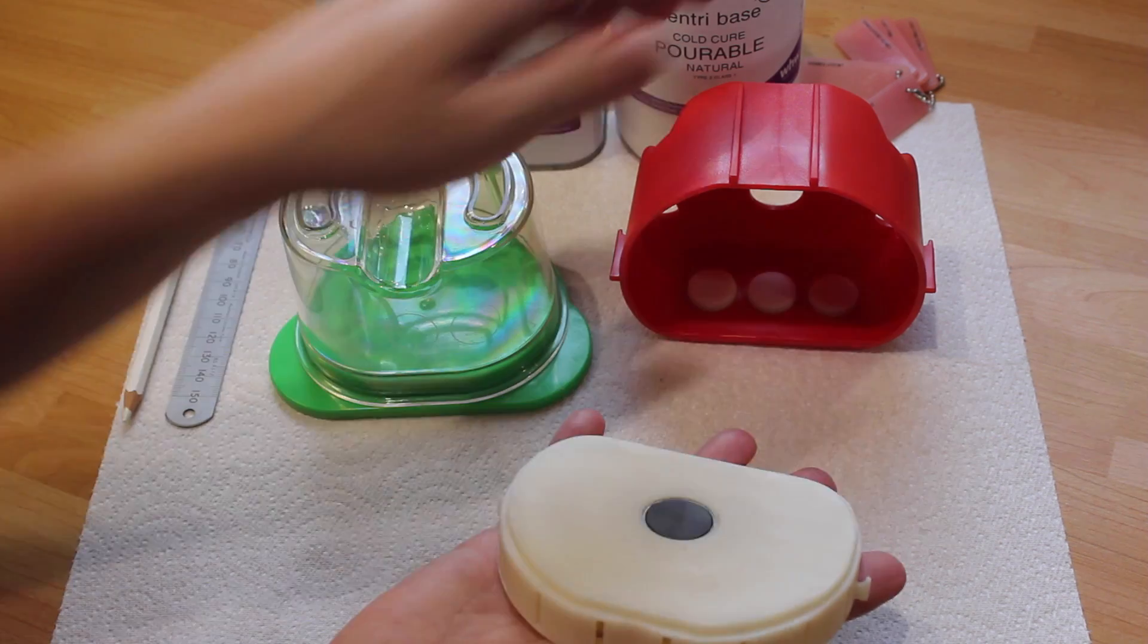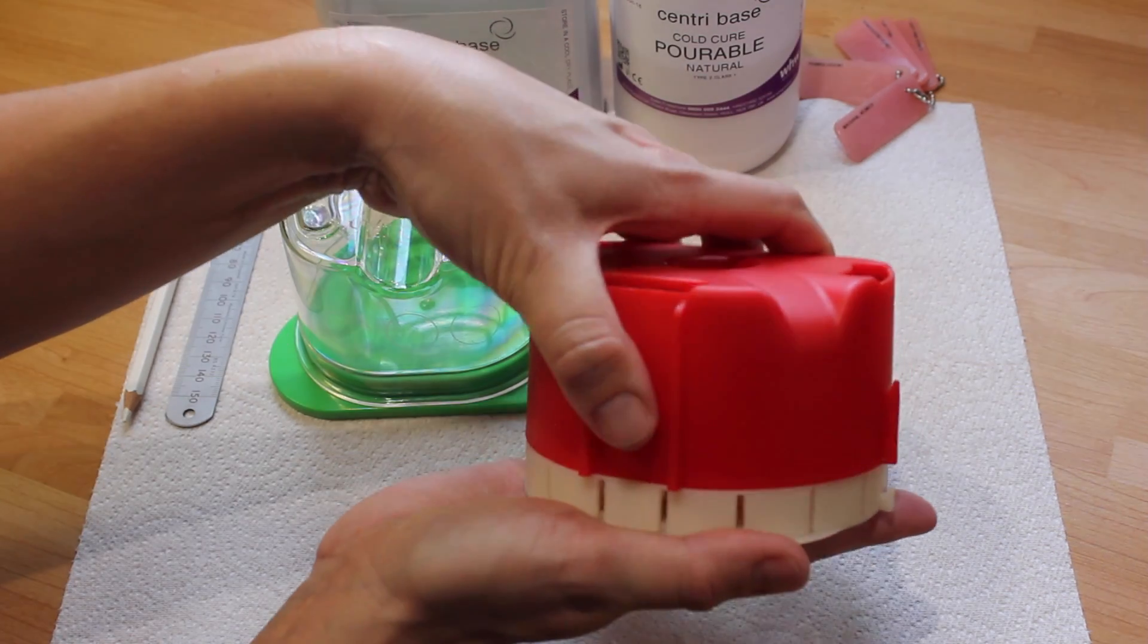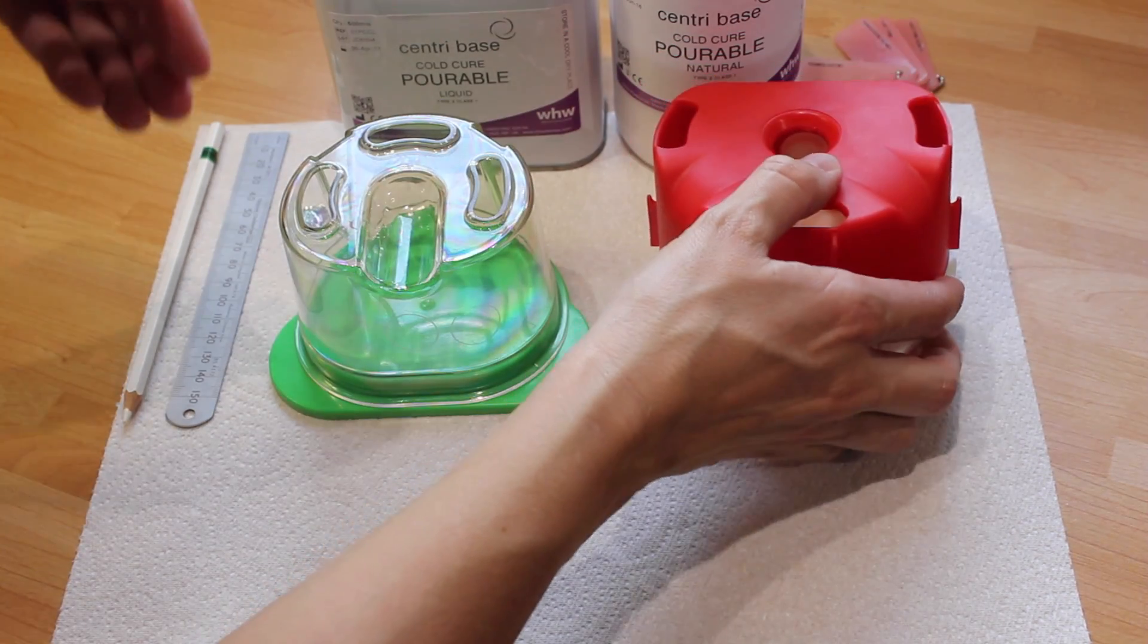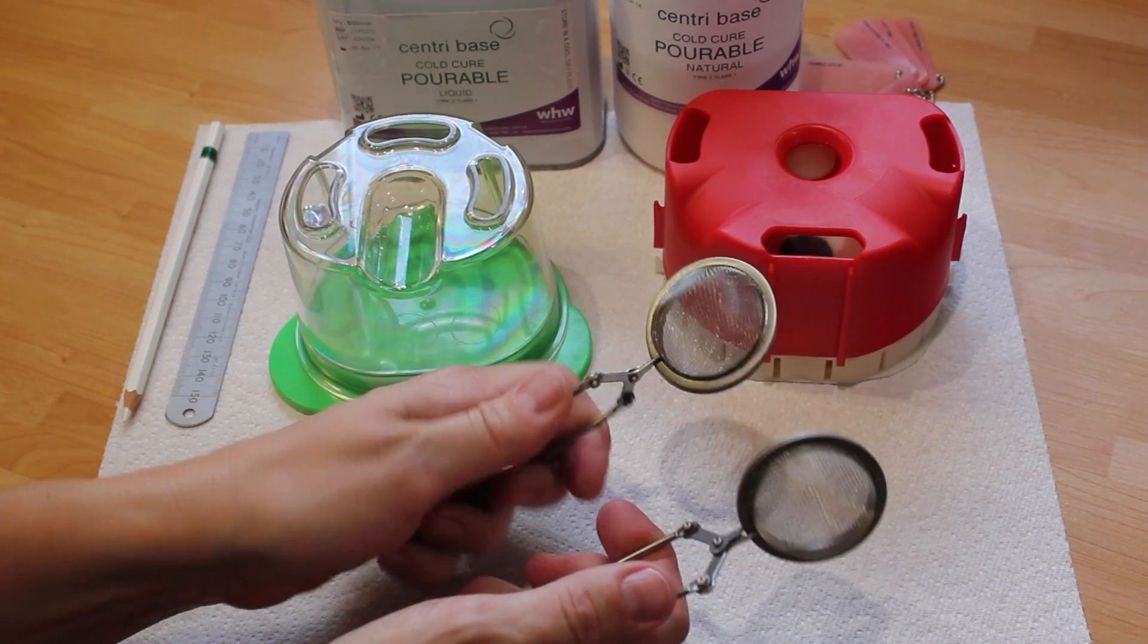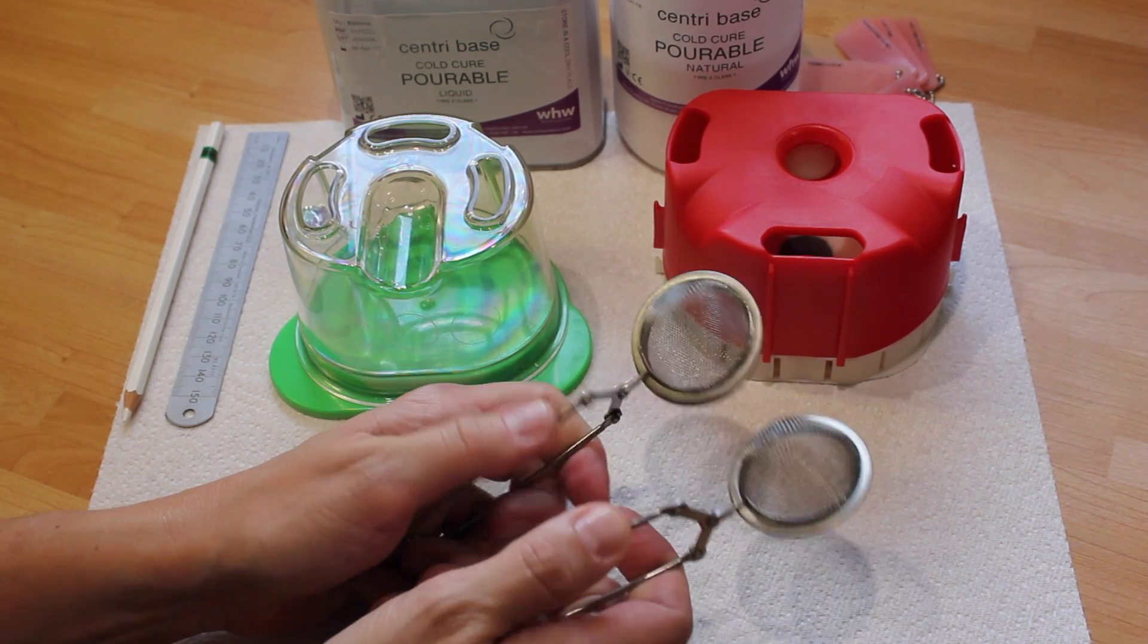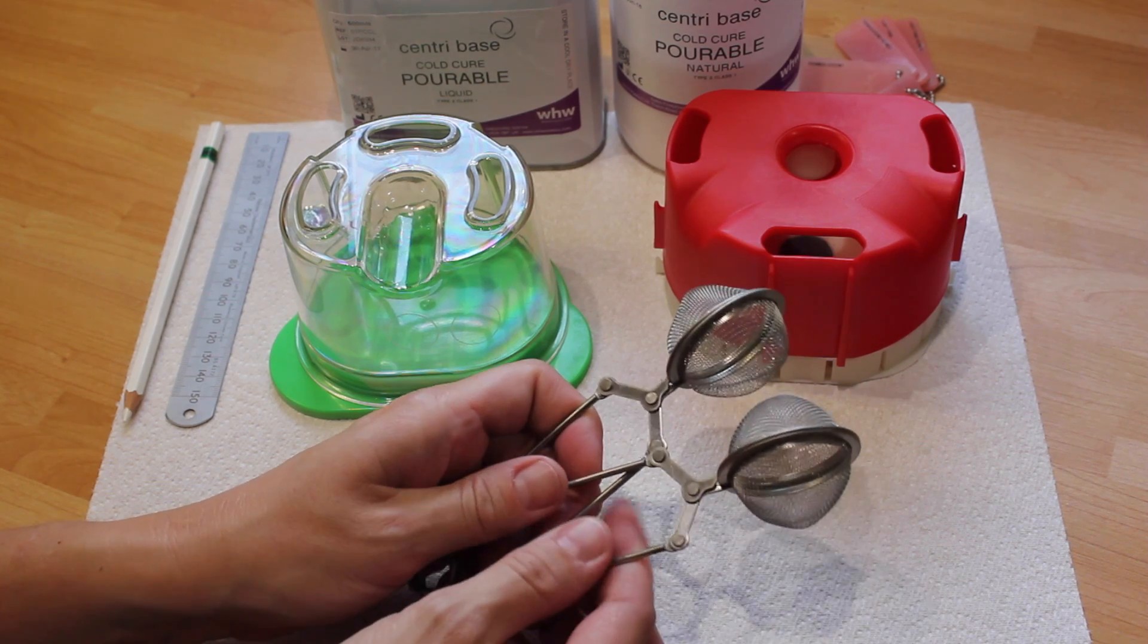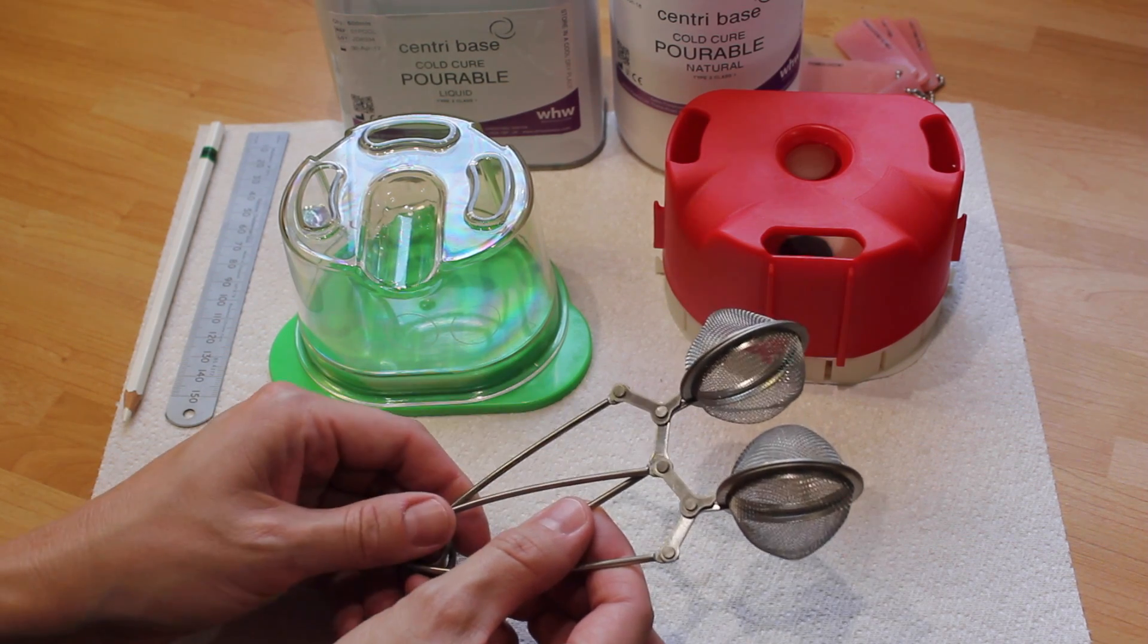This is something you would miss when you do flask customization. I find the use of small tea strainers like this very useful to prevent you mixing the teeth up before you put them back in the mold.